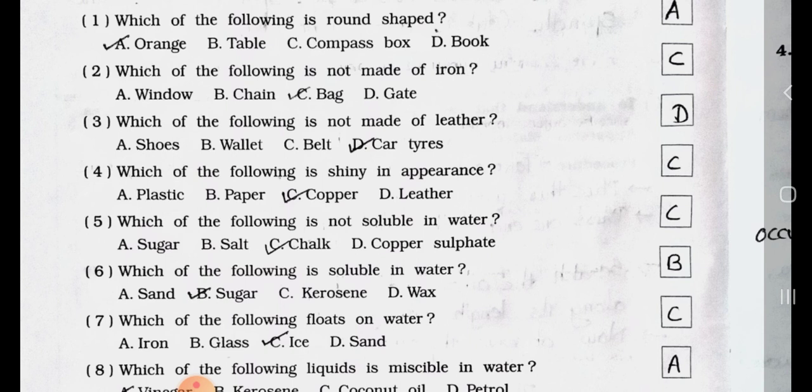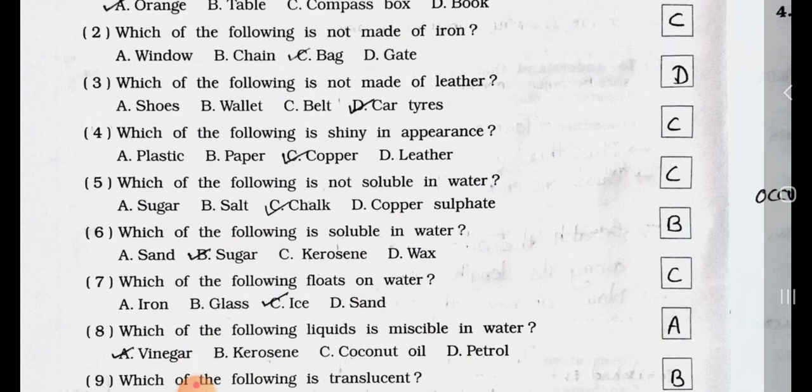Which of the following is not made of leather? A. Shoes, B. Wallet, C. Belt, D. Car Tyres. Answer is Option D. Car Tyres. Question No. 4.